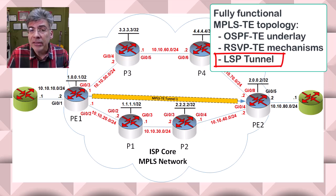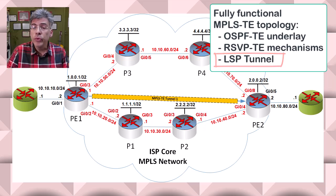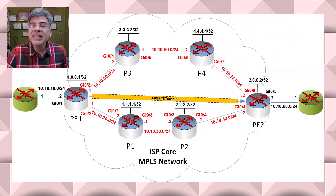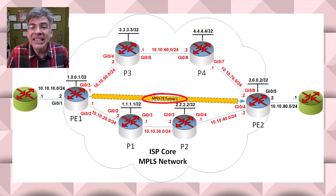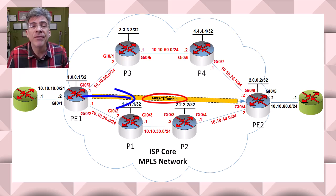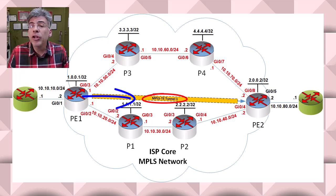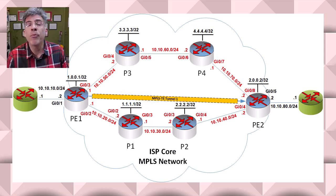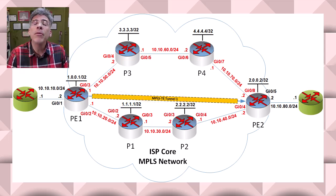Now what? Well, we have to start routing traffic down our tunnel. Remember, once the LSP tunnel is up it doesn't do anything unless we configure the topology to route traffic down it, just like any other physical or tunnel interface. There are several options we can use to route the traffic — some are more conventional while others are more specific to MPLS TE.